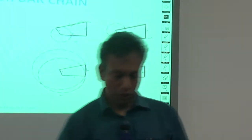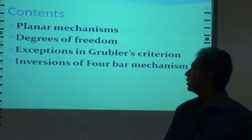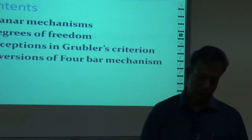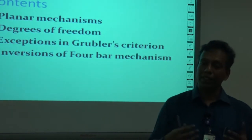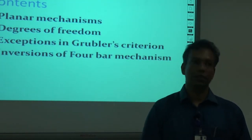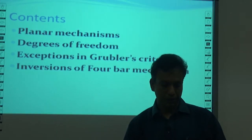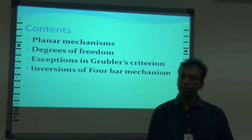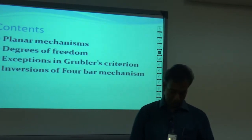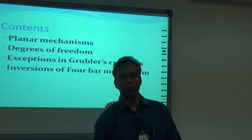To summarize, we started by discussing planar mechanisms, then degrees of freedom with examples. We then saw how Grübler's criterion is used to find degrees of freedom, concluded that this equation has certain exceptions, and then discussed inversions — specifically how different inversions of the same four-bar mechanism are obtained under the Grashof condition to yield crank-rocker, double-crank, and double-rocker motions. Thank you.